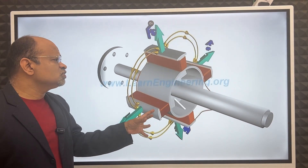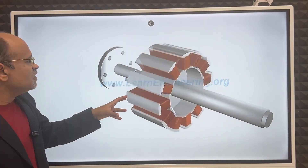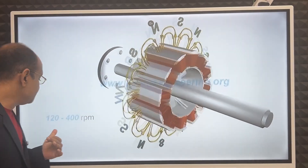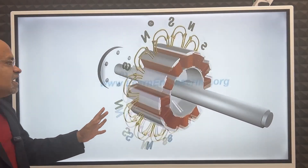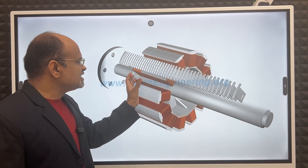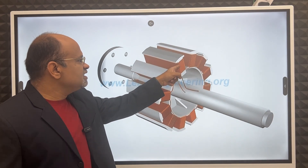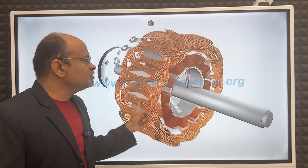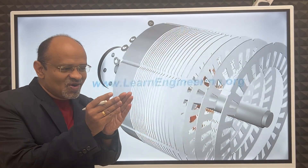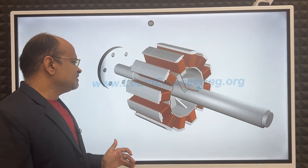If we use fewer poles, the rotor can split apart due to centrifugal force, so we use more poles to reduce speed — for example, 400 RPM with more poles. The laminations or stampings in the stator are used because eddy currents form in metal just as they do in coils. By using thin stampings, the eddy current is reduced to a negligible level.